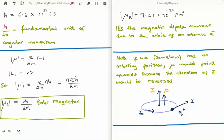Now I've tried to reiterate a number of times that the minus sign on the charge is very important. So just to illustrate that, let's say for example somehow we had an orbiting positron. The moment would point upwards because the direction of the current would be reversed.